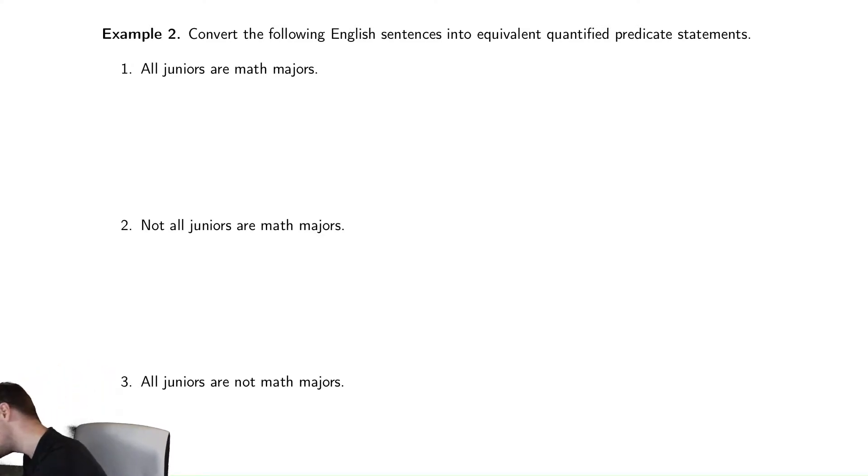So we're going to have two predicates here. The first one is that somebody is a junior, so we're going to have J of x, because x is a junior. And then we're going to have a second predicate, which is M of x, which is that x is a math major.